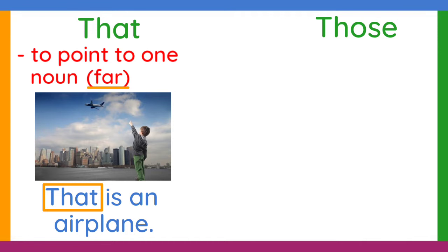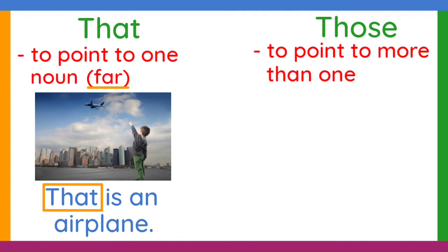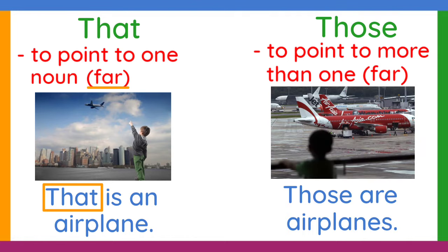Now let's have those. Those is used to point to people or things — plural nouns — meaning there's more than one, and they are far from the person. For example, those are airplanes. Those is used here because the airplanes are far from the child, and as you can see, there is more than one airplane.